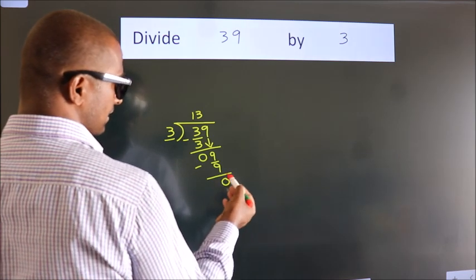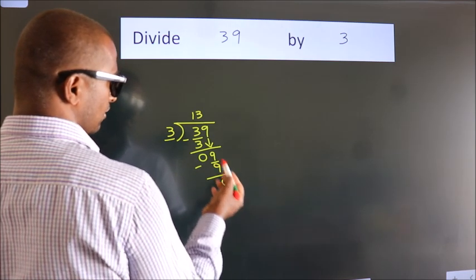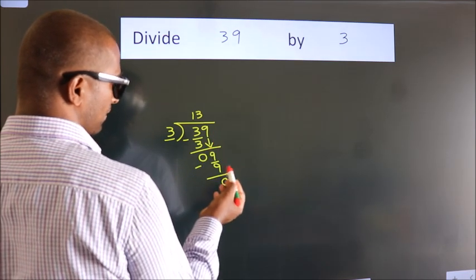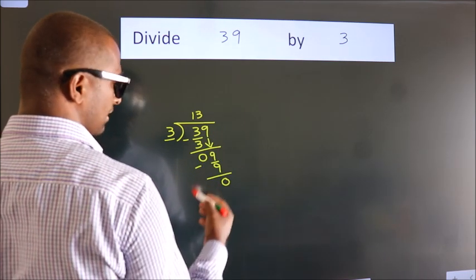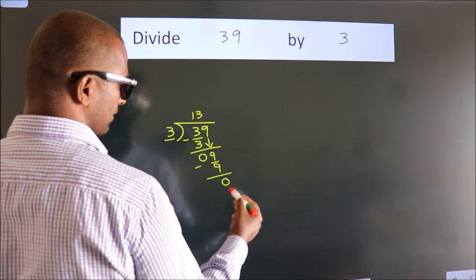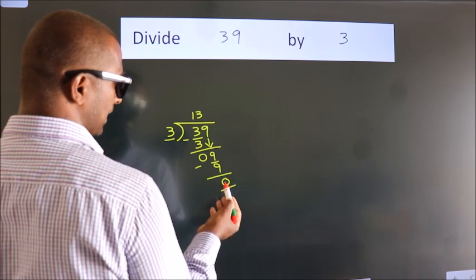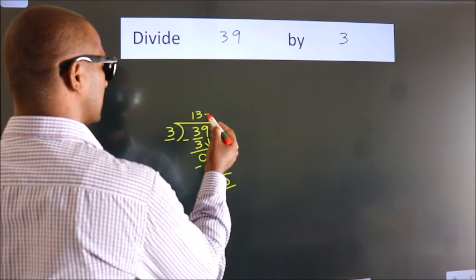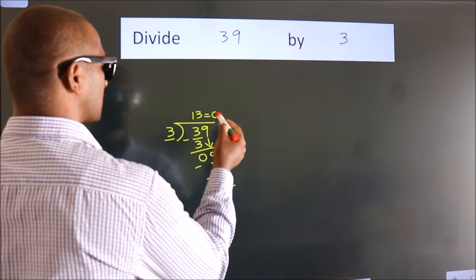After this, no more numbers to bring down, and we got remainder 0. So this is our quotient.